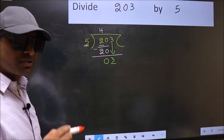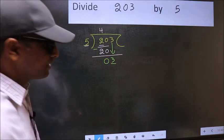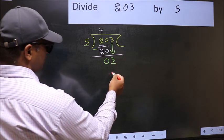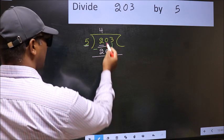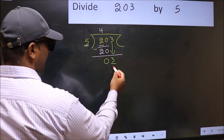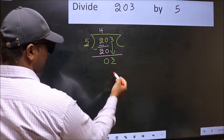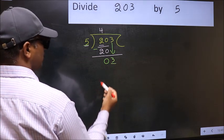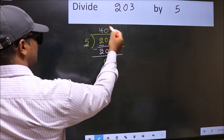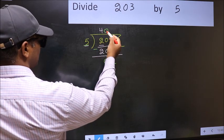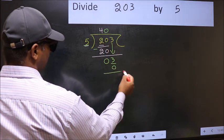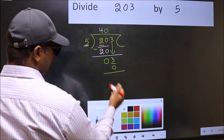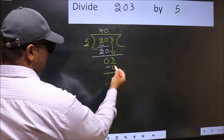Instead, what you should think of doing is: what number should we write here? If I take 1, I will get 5. But 5 is larger than 3. So what we should do is take 0. So 5 into 0 is 0. Now you should subtract: 3 minus 0 is 3.